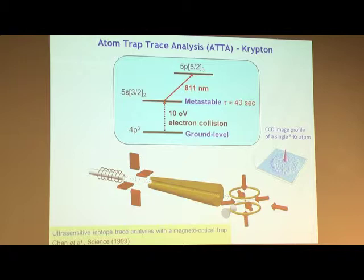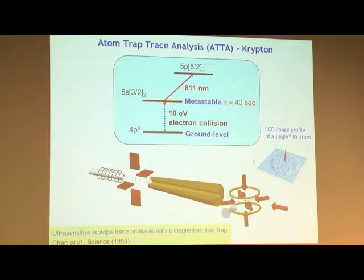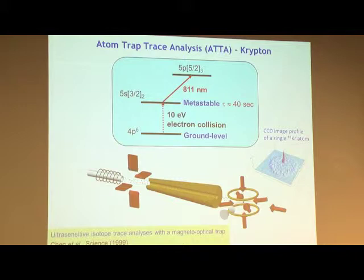When we first saw this signal, I knew we had made a new method work. I needed a name for it. There was low-level counting (LLC) and accelerator mass spectrometry (AMS). I was driving on 75th Street thinking about it and came up with 'Rare Atom Trap Spectrometry' — RATS — a nifty acronym. But nobody liked it. Meanwhile, Linda proposed 'Atom Trap Trace Analysis' — ATTA — and we all liked it. So that's the name for the method.